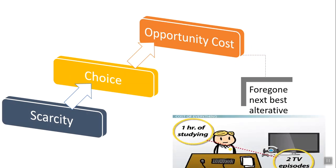For example: I have one hour. Either I study, or I go watch two episodes of a movie or cartoon. I have to make a choice. If I go with two TV episodes, I have to sacrifice studying. If I go with the study option, I have to sacrifice two TV episodes. Whatever you sacrifice is called opportunity cost, and that happens in our daily life as well.